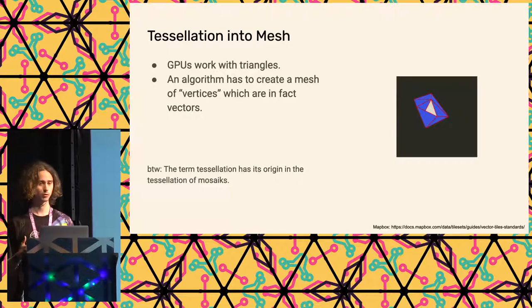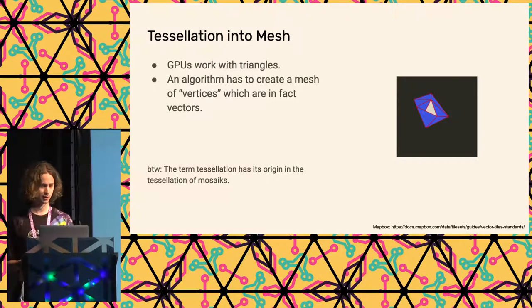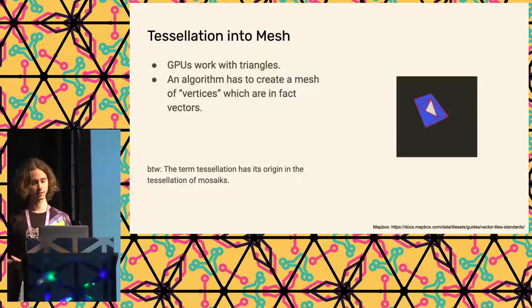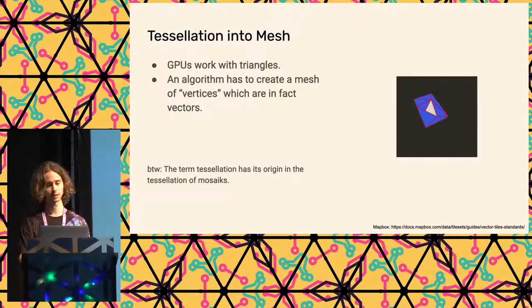To work on this data, we somehow have to send it to the GPU. GPUs only work with triangles, so we somehow have to create a mesh out of this tile. There are fancy algorithms for this — in this example I just drew it by hand. The term tessellation originally comes from mosaics. It's just a way to make triangles out of any geometric shapes, except circles.